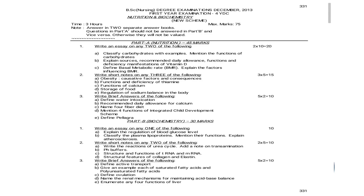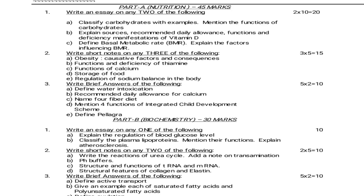The third question paper is December 2013. Under Nutrition essay questions: Classify carbohydrates with examples and mention the functions of carbohydrates. Explain sources, recommended daily allowances, functions and deficiency manifestations of vitamin D. Define basal metabolic rate and explain the factors influencing it. Short notes — 5 marks: Obesity, causative factors and consequences. Functions and deficiency of thiamine. Functions of calcium. Storage of iron. Regulation of sodium balance in the body. Brief answers — 2 marks: Define water intoxication. Recommended daily allowances for calcium. Name 4 fiber diet. Mention 4 functions of ICDS — Integrated Child Development Scheme. Define pellagra.